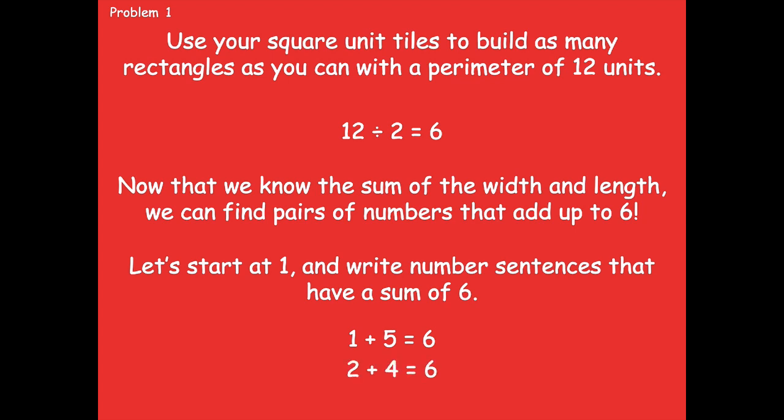2 plus 4 equals 6. Then 3 plus 3 equals 6. Then 4 plus 2 — I don't have to write that because I already have 2 plus 4. And 5 plus 1 I don't have to write because we already have 1 plus 5. We definitely wouldn't go to 6, because 6 plus 0 can't give us a rectangle — you can't have a side length of 0.